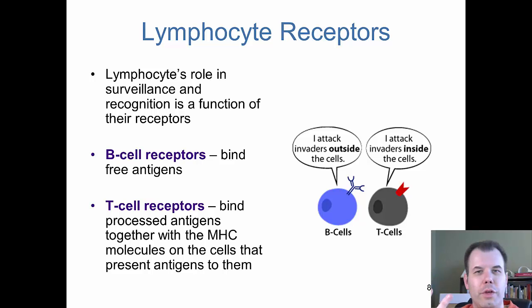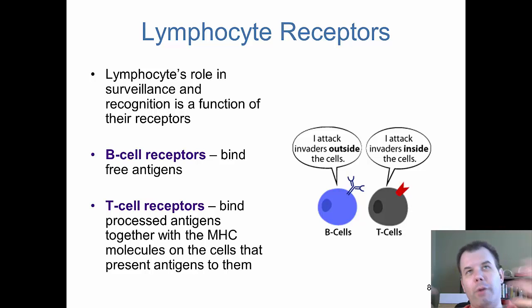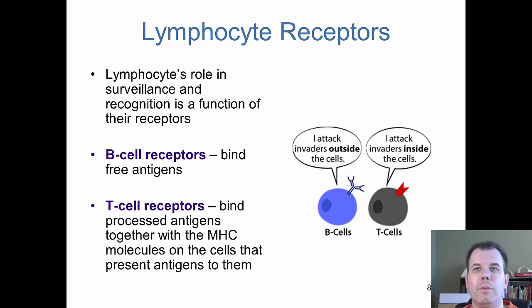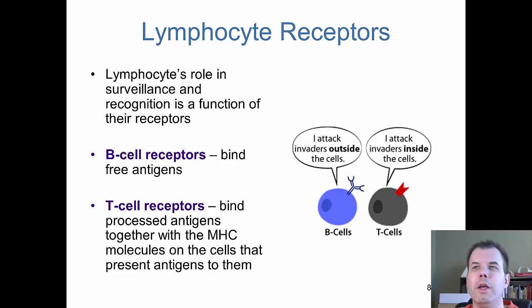The best way to remember B cells versus T cells: B cells go after outside invaders — things outside the cells. T cells are specific for antigens or pathogens that are inside the cells, like viruses. B cells attack the outside of cells; T cells attack inside cells. B cell receptors bind free antigens; T cells help present and then bind to other cells to attack and kill. B cells produce antibody; if you remember that, you've got B and T cells figured out.